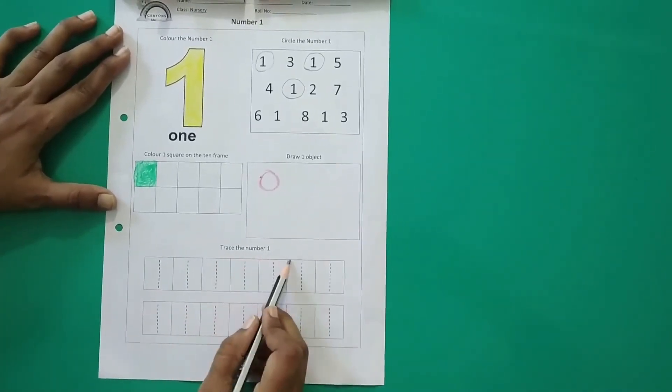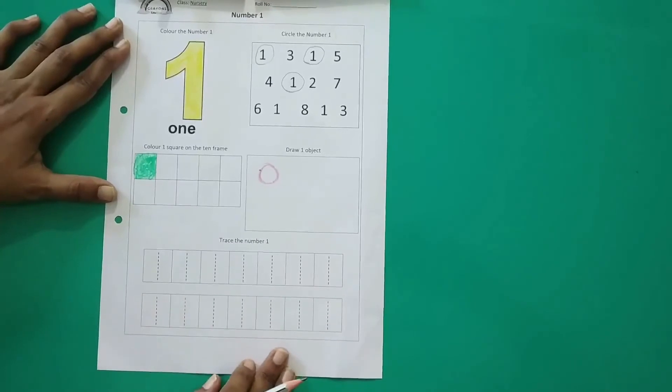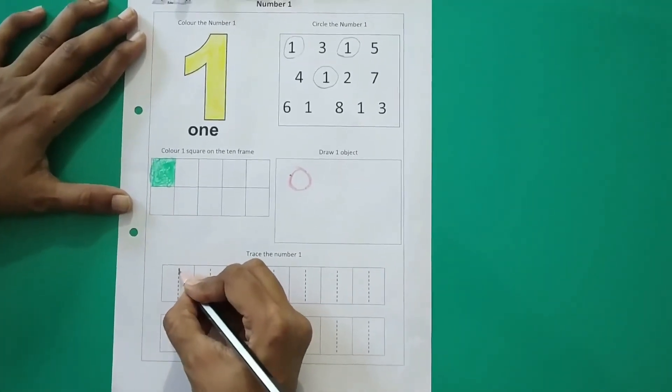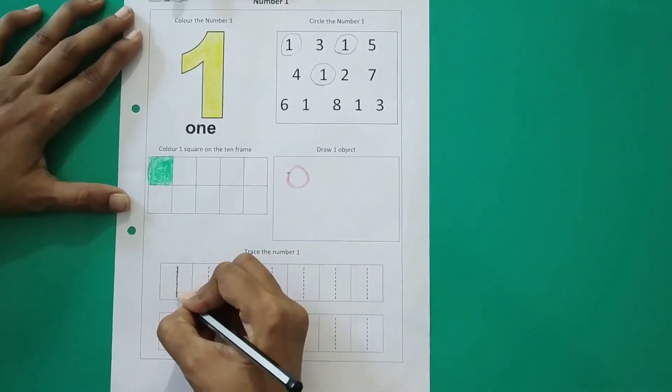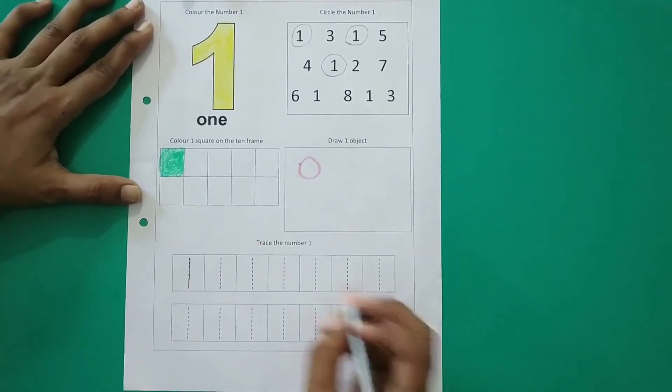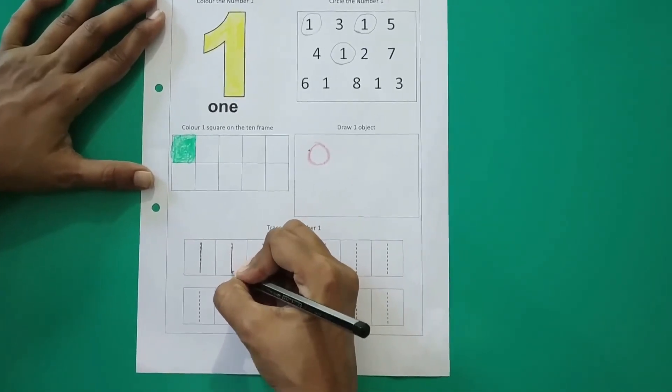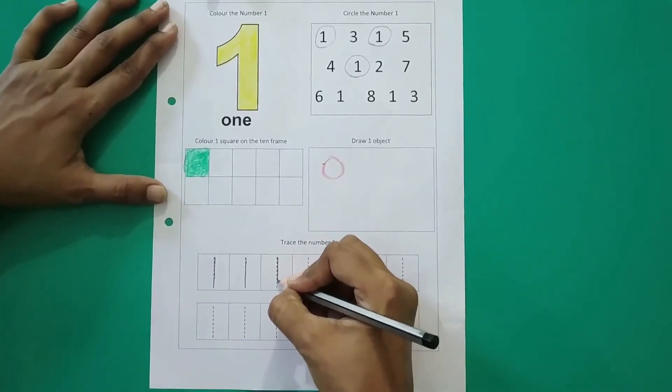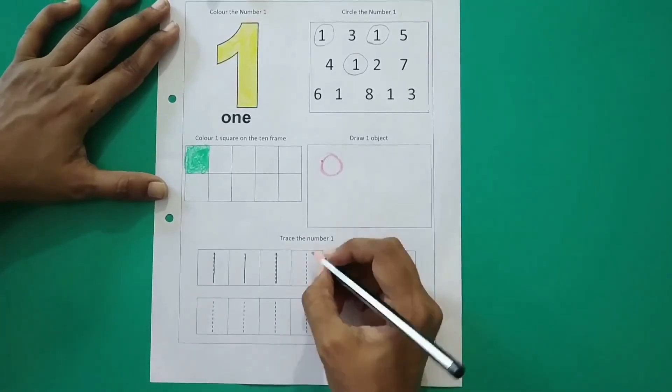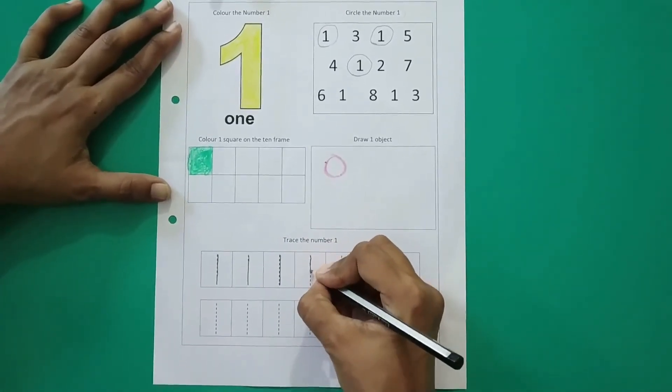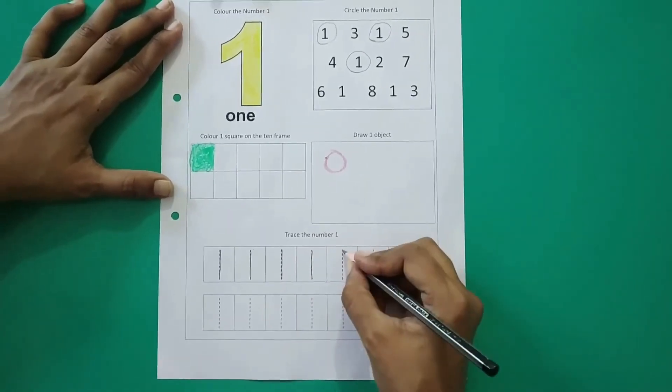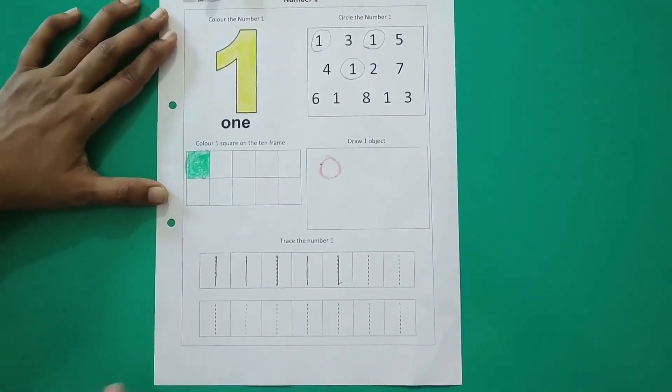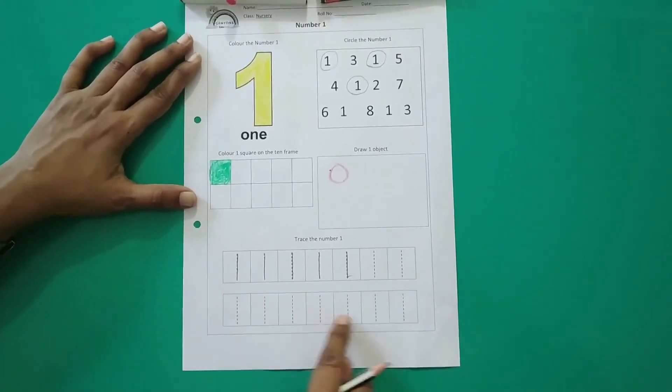Next, trace the number 1. Now you can see these numbers here. Now we have to write number 1. So how do we write number 1? It's like a standing line. Simply join the dots, straight line down. Number 1. Do it very slowly and neatly. Number 1. Again. Number 1. And say and write.